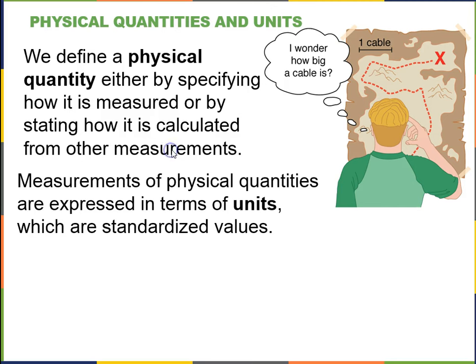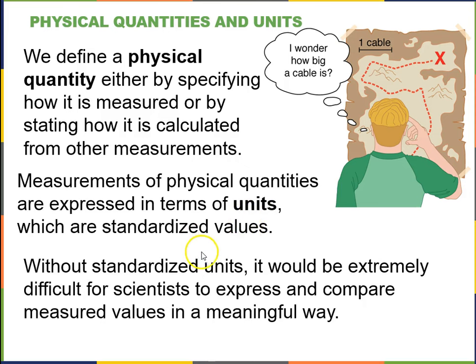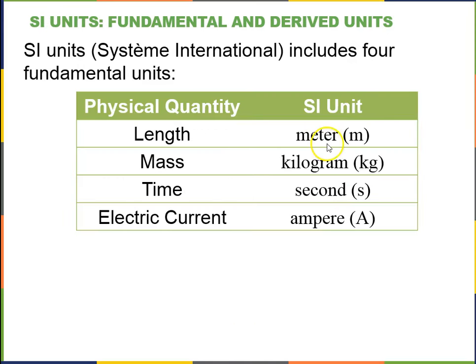So measurements of physical quantities are often expressed and are always expressed in terms of units, which are standardized values. So without standardized units, it would be extremely difficult for scientists to express and compare measured values in a meaningful way. So for length, our standardized unit is the meter. For mass, the standardized unit is the kilogram. For time, it's the second. And the fourth one is electric current has a standard unit of the ampere, which comes up in physics 132 and subsequent physics courses.